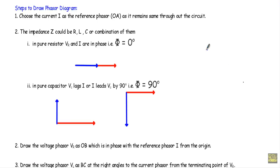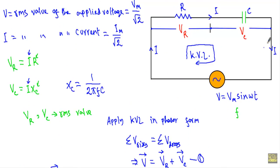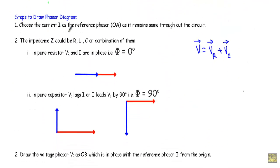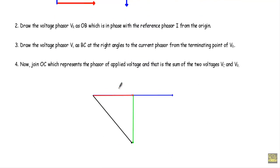Now I will show you the phasor diagram of the series RC circuit. We have to find the applied voltage by taking the sum of voltage absorbed by the resistor and voltage across the capacitor. When drawing a phasor diagram, we must first define a reference phasor which remains the same all over the circuit. In a series RC circuit, the current I is the same throughout the circuit, so I will take current I as the reference phasor, represented by line segment OA along the positive X-axis.